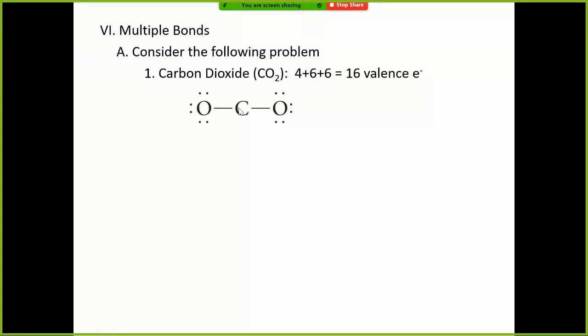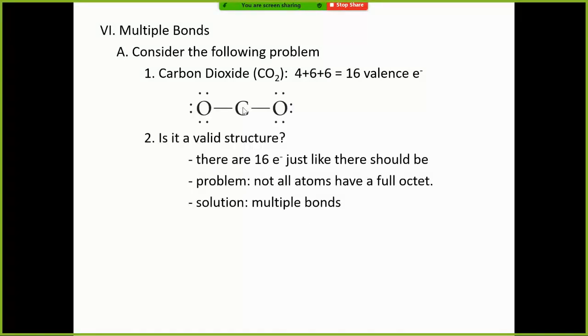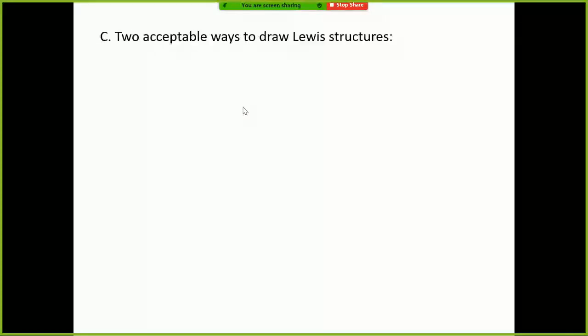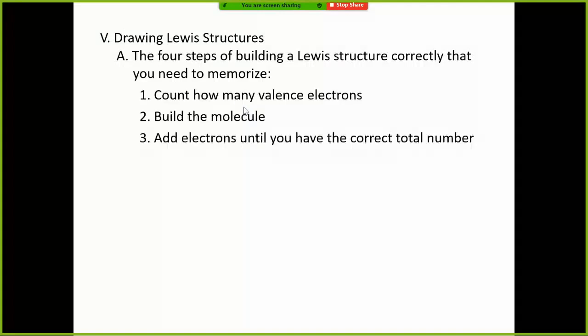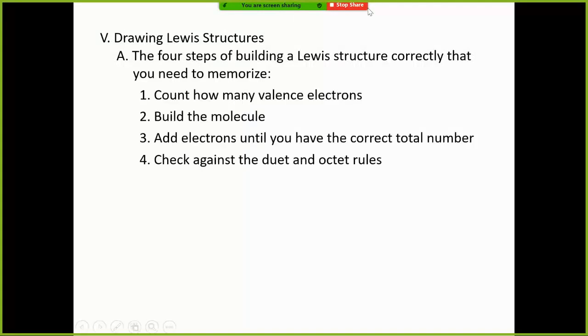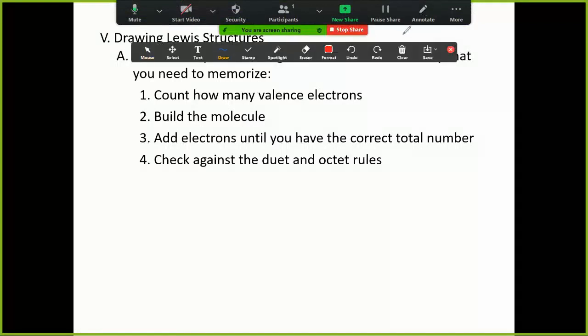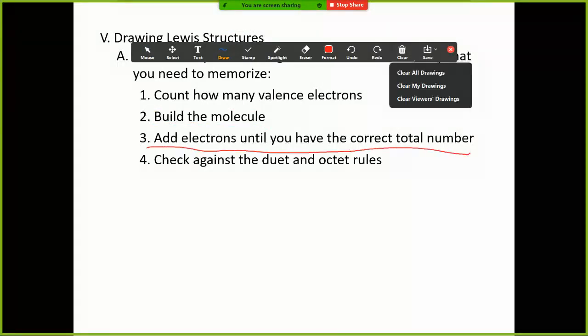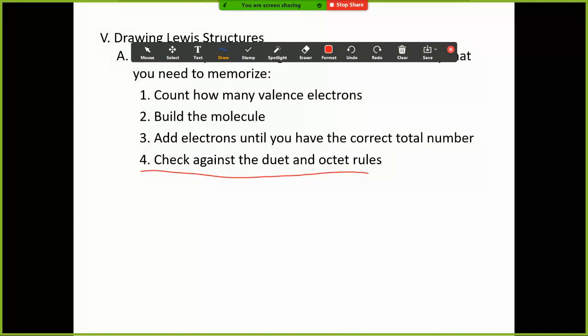How do you know it's not single bonds like this, but rather double bonds like this? In order to answer that, we need to check out a quick review of the things you're supposed to do in order to properly come up with a Lewis structure. So remember, you count your valence electrons first, and then once you're done counting your valence electrons, you can then build the molecule and then add electrons until you have the correct total number, and then check again against the duet and octet rules to make sure every atom has the right number of electrons around it.